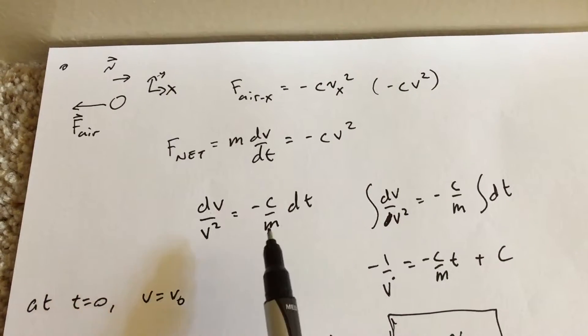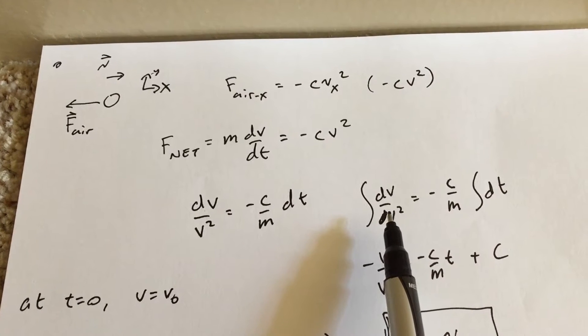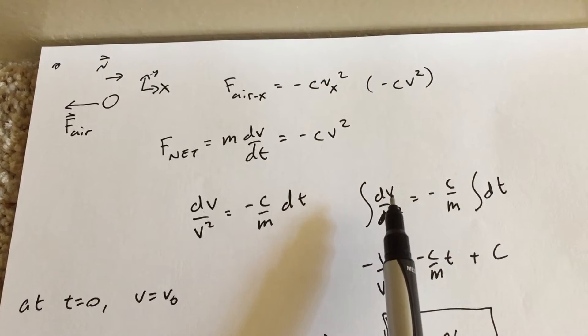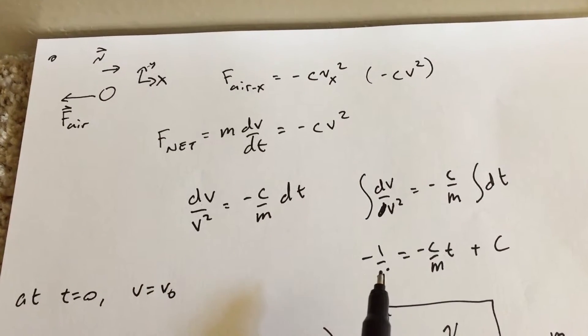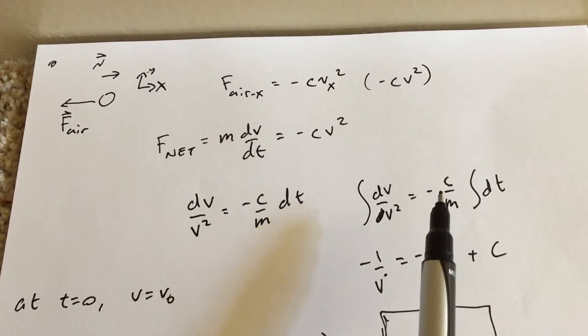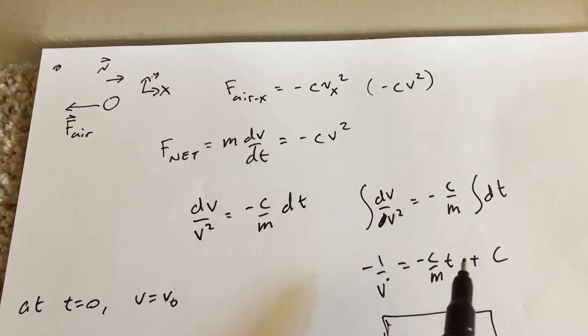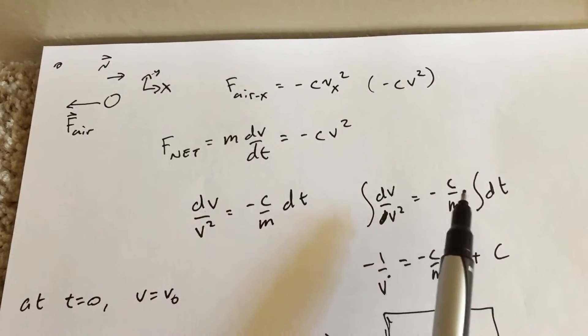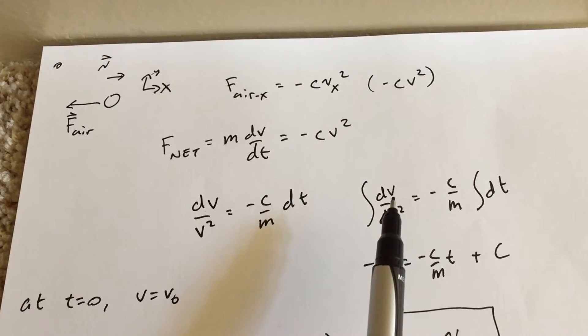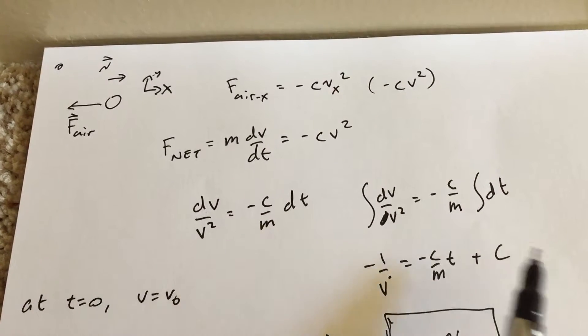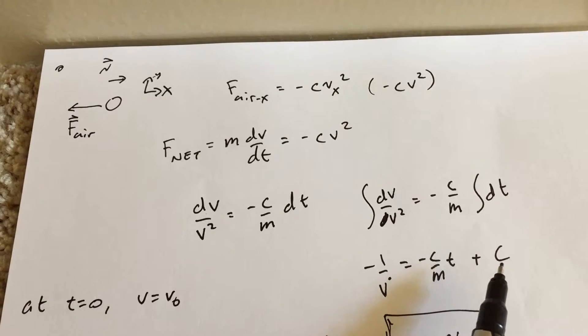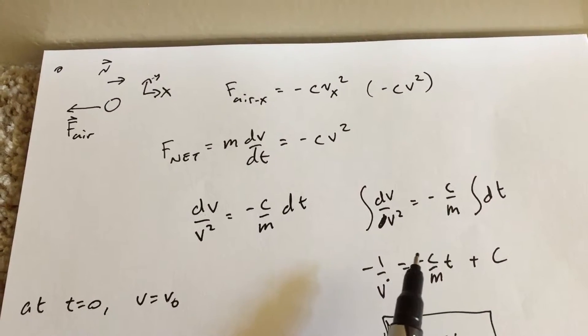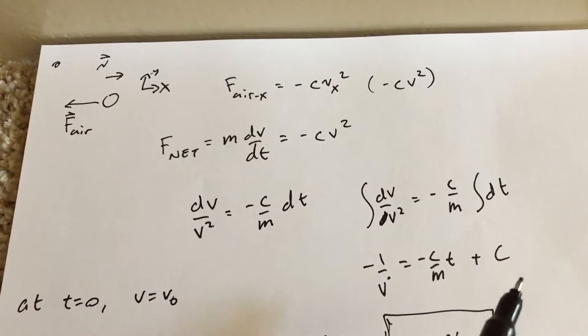So I can integrate both sides now. So I can integrate this with respect to v, and that with respect to t, and this is the integral of dv over v squared is negative 1 over v. The integral of some constant times dt is just t. Now both of these are indefinite integrals, so they have to have a constant. But I can just combine them together with just one constant, c. It's a big c. It's not that. That was a dumb move. Okay, anyway.